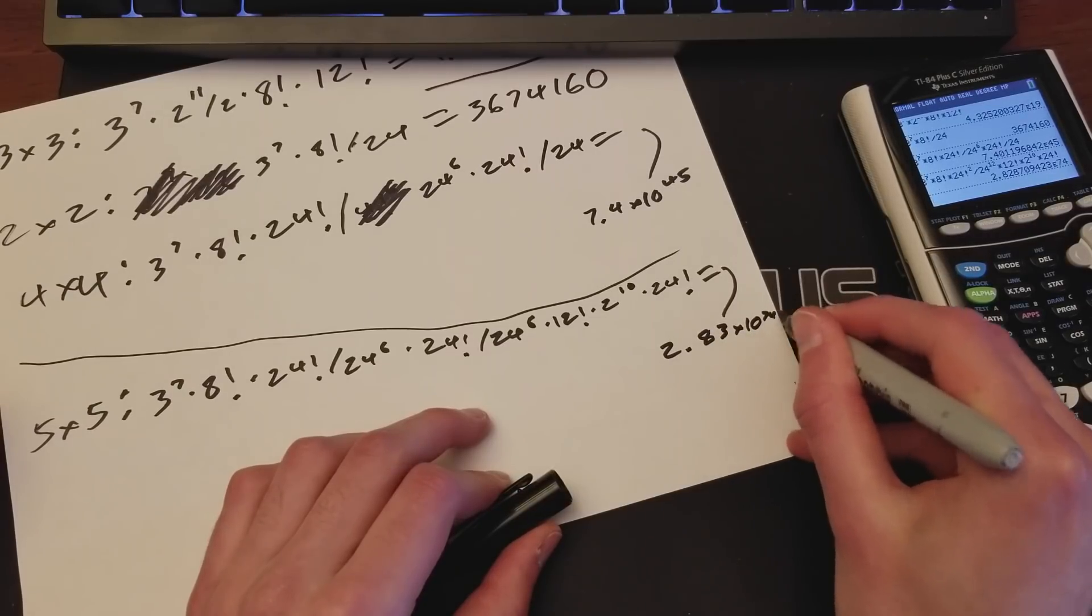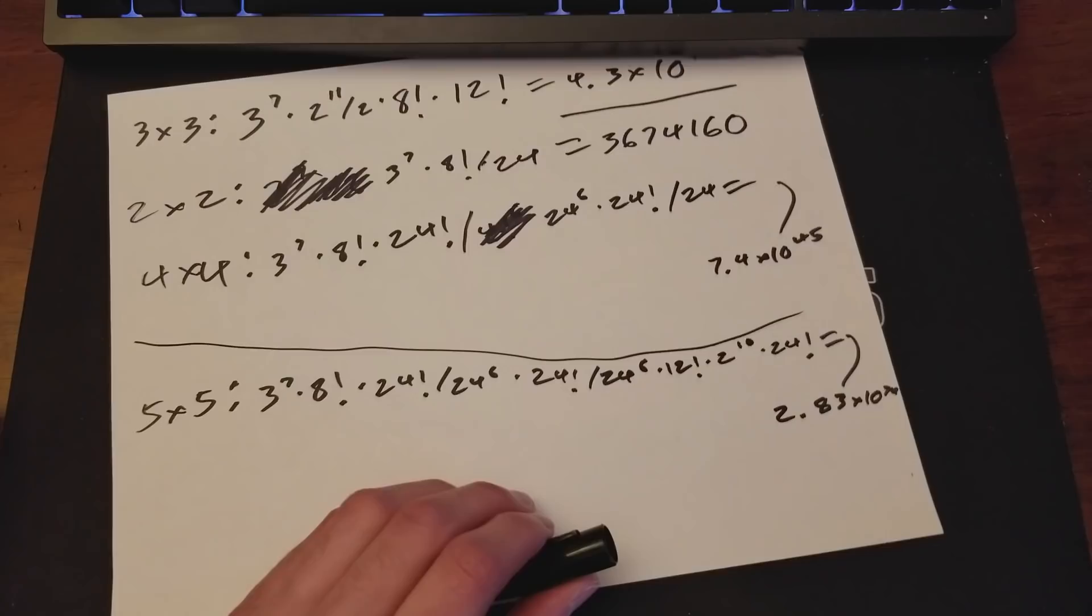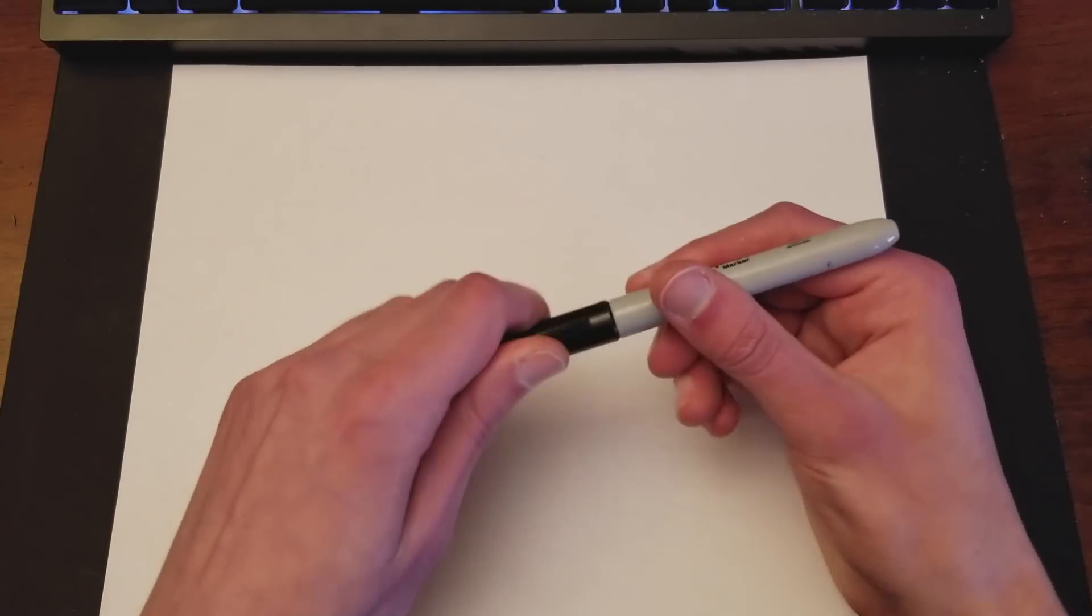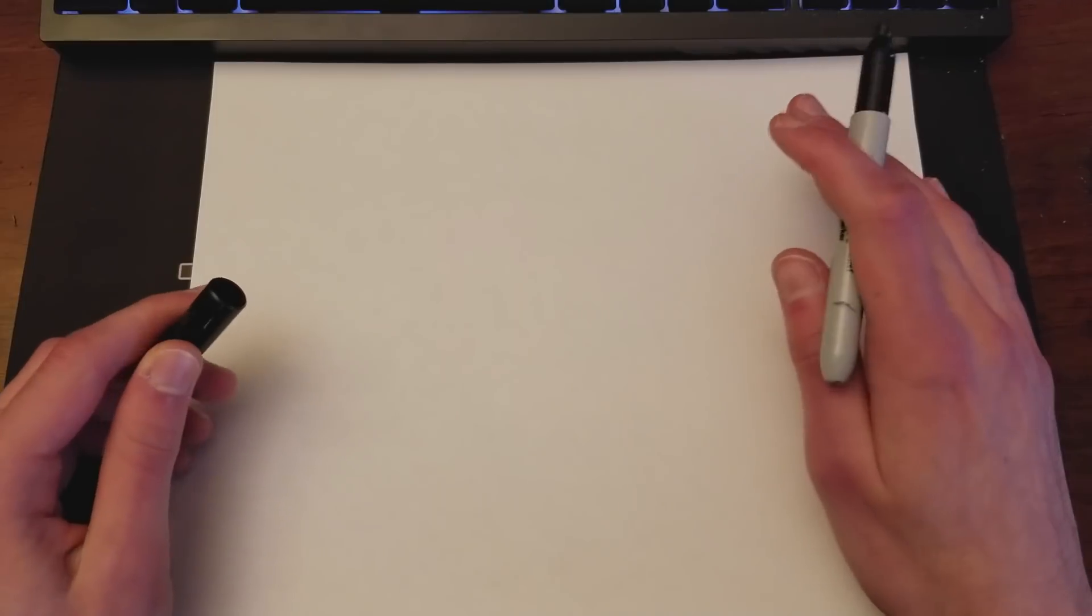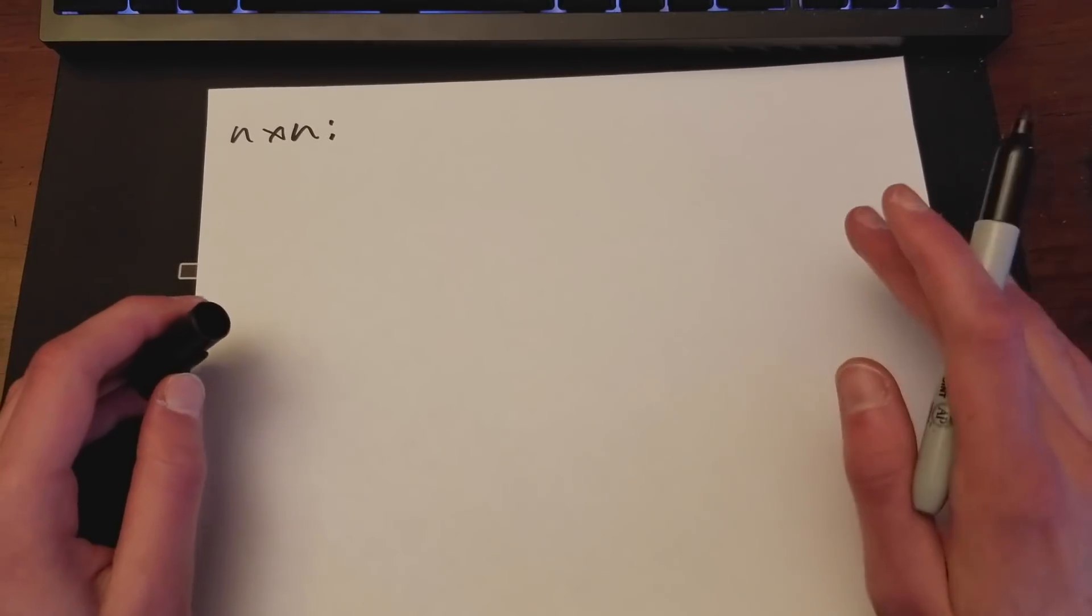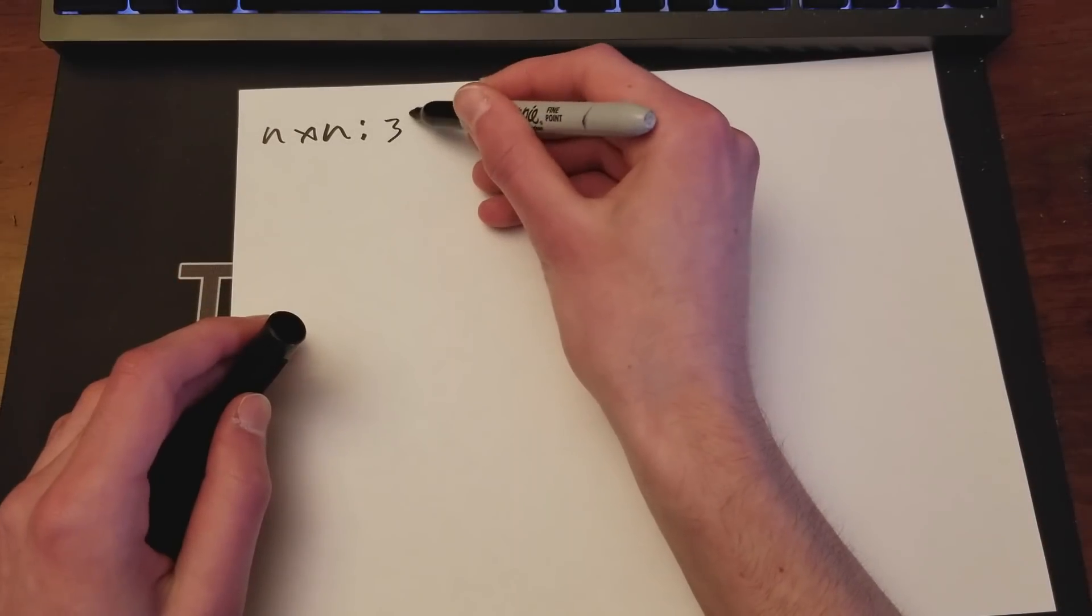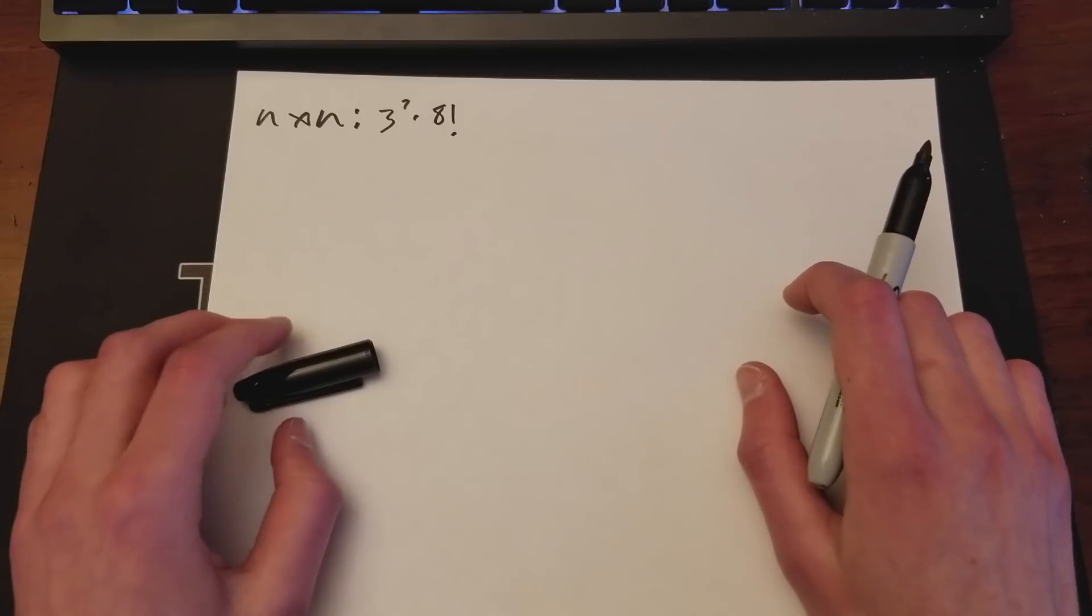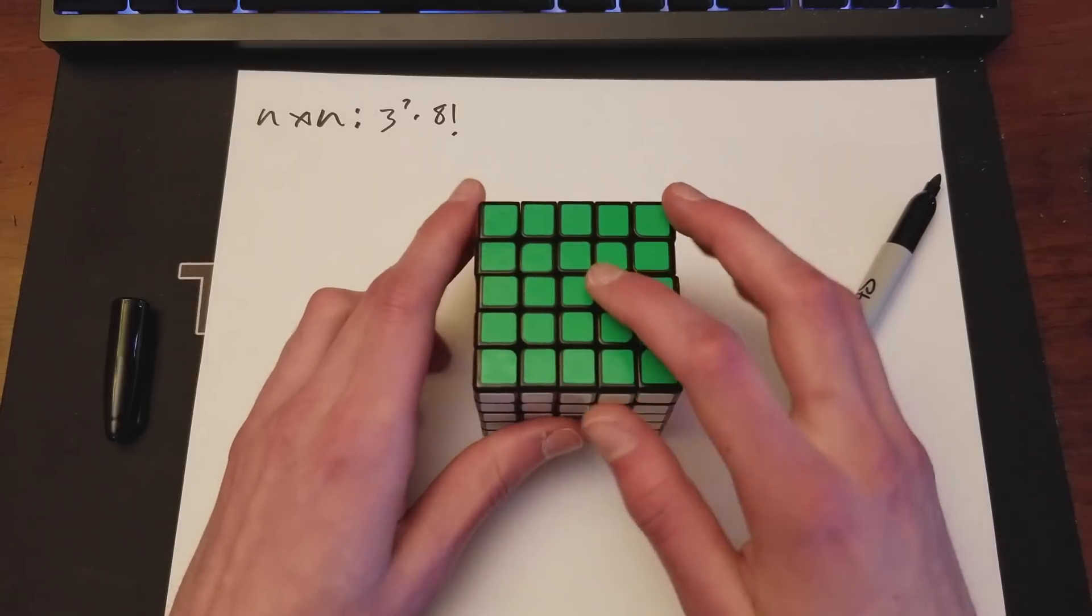So each of these work the exact same as the centerpieces on the 4x4. So we're just going to be factoring that in twice. So let's take these pieces first. So you've got four of them. And four of them on each side. So that leaves us with 24 factorial. And then you account for the equality of the color, pretty much, since there's only one by dividing by 24 to the 6th.